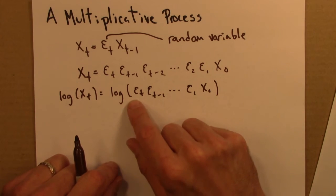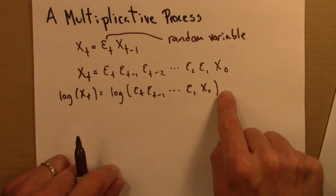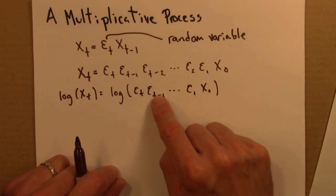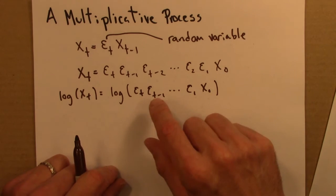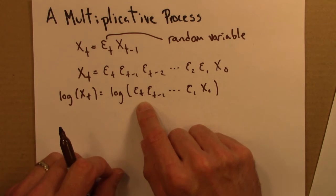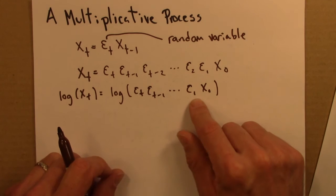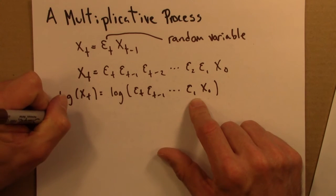So recall that logarithm of a product becomes addition. So log of a times b is log of a plus log of b. So this long string of things multiplied together is the same thing as the logarithms of these things added together. So there's one x0 and then all of these epsilons. So I can write this like this.